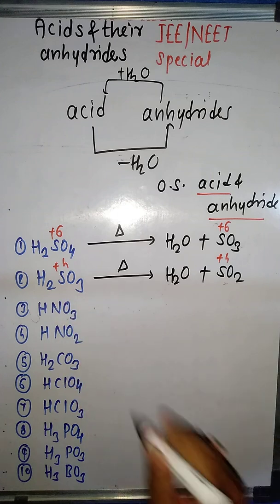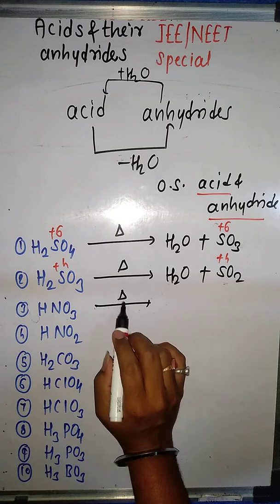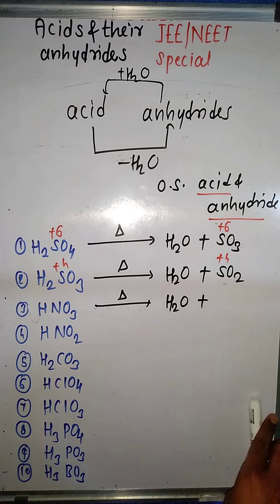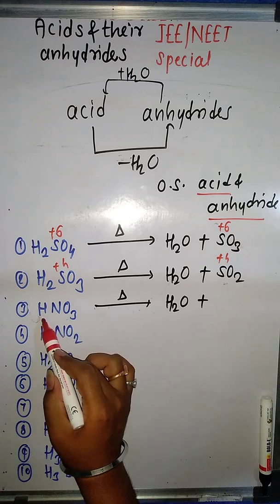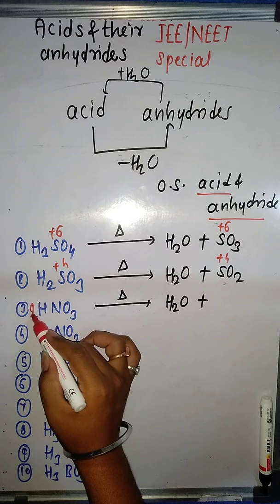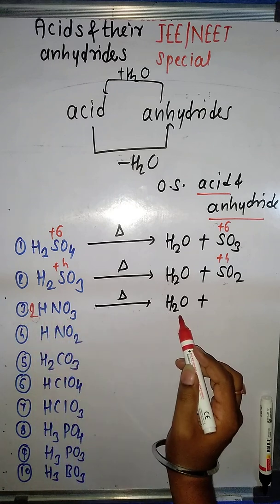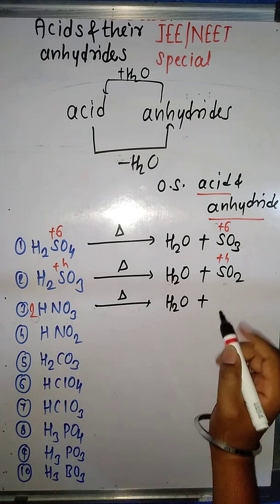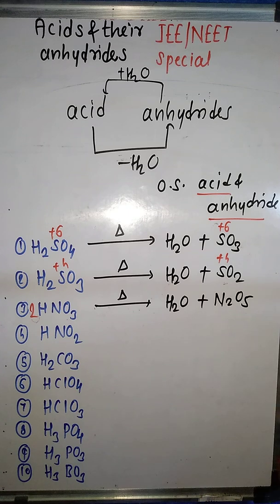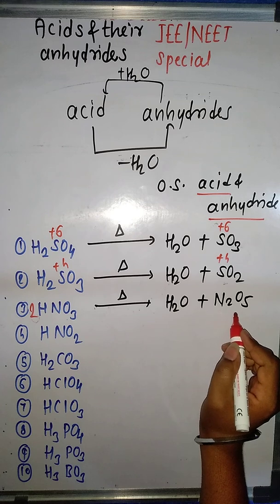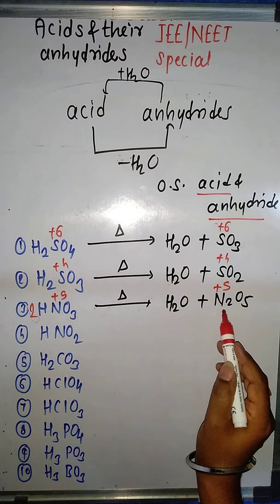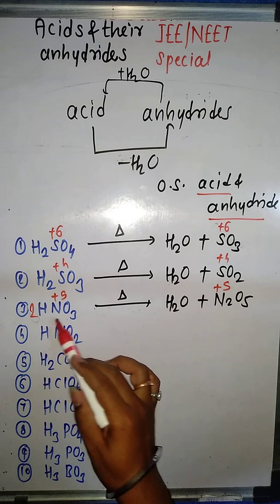Next example is HNO₃. When heated with a strong dehydrating agent, the first product is H₂O. Since there are two hydrogens in H₂O but only one in HNO₃, we multiply to balance: this gives us H₂O balanced with 2HNO₃. What's left behind is 2 nitrogen and 5 oxygen, giving N₂O₅. The oxidation state of nitrogen in HNO₃ is +5, and in N₂O₅ it is also +5. So nitrogen pentoxide is the anhydride of nitric acid.